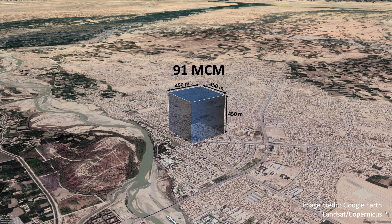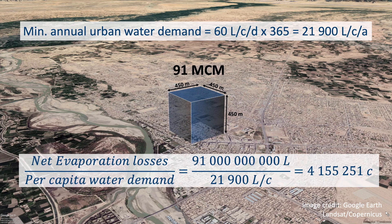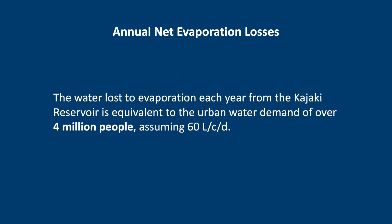How can we quantify the economic impact of evaporation losses? Let's do some quick calculations. If we assume a minimum daily urban water demand of 60 liters per capita per day, that makes 21,900 liters per capita per year. If we divide the annual net evaporation losses by the per capita water demand, we end up with over 4 million people. This means that the water loss to evaporation each year from the Kajaki Reservoir is equivalent to the urban water demand of over 4 million people, assuming 60 liters per capita per day.